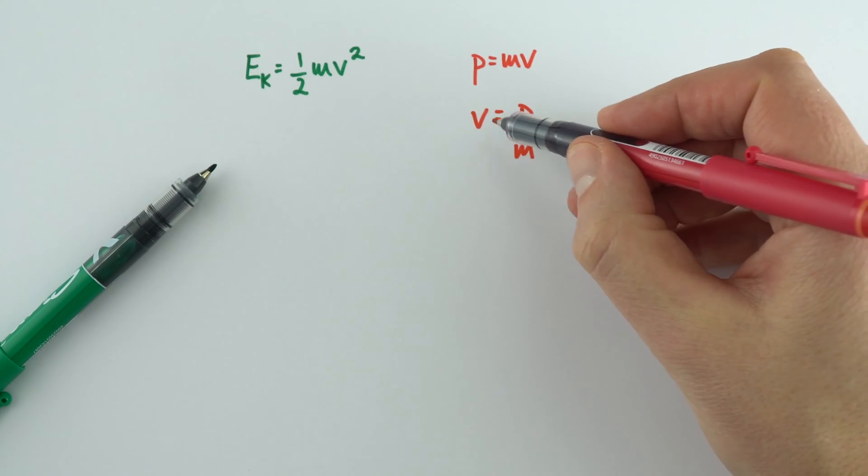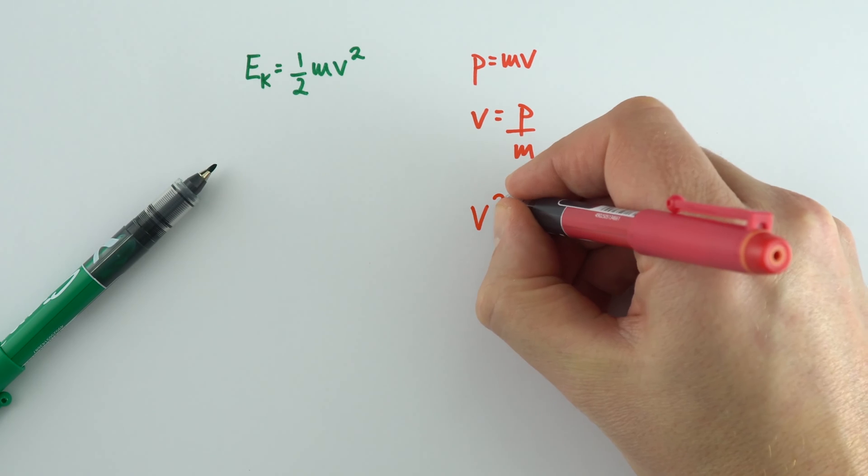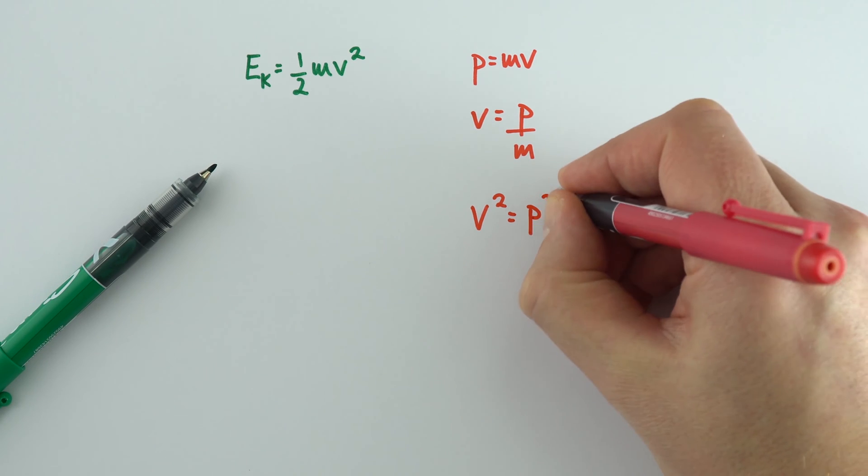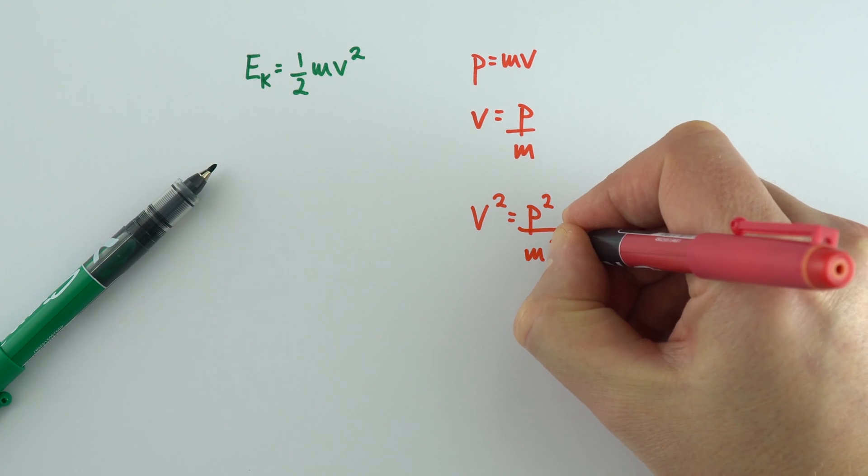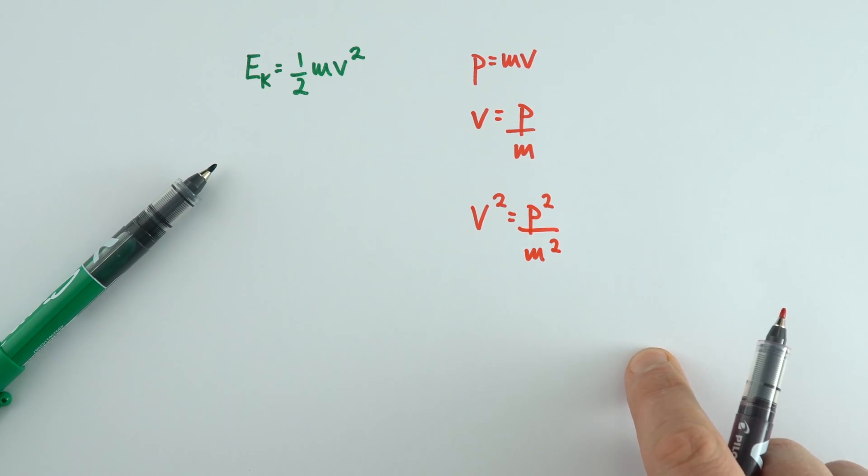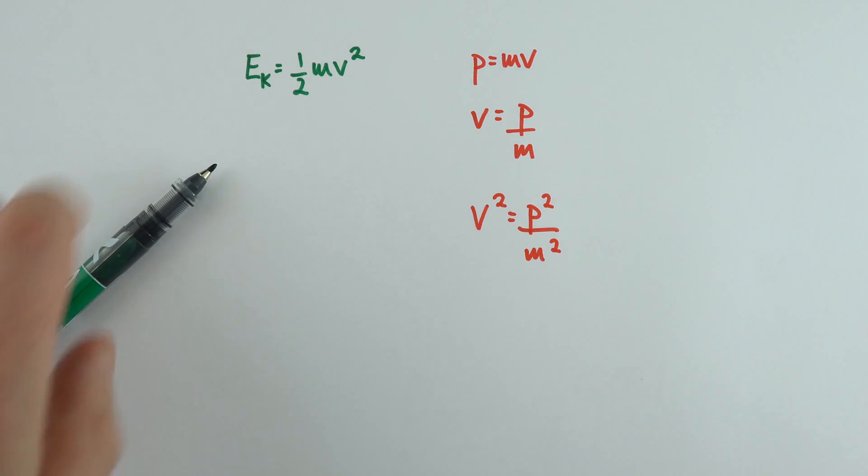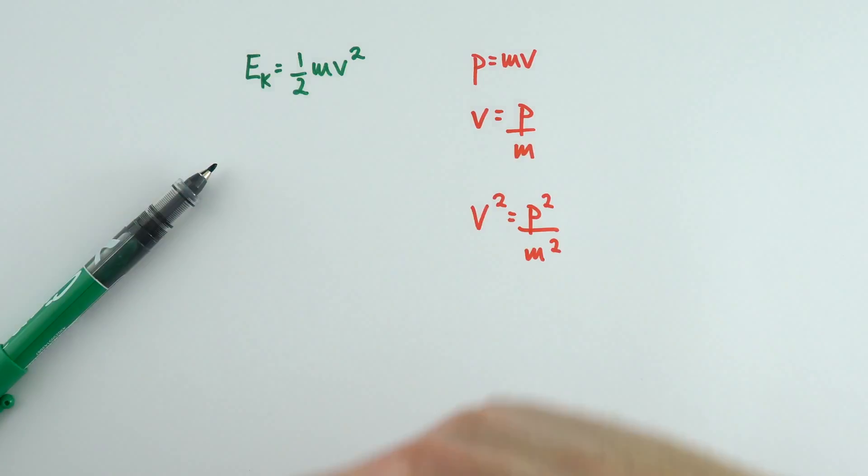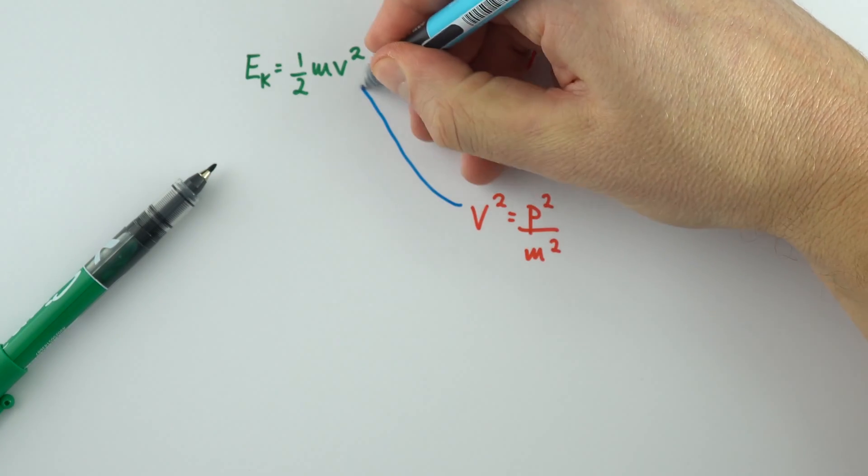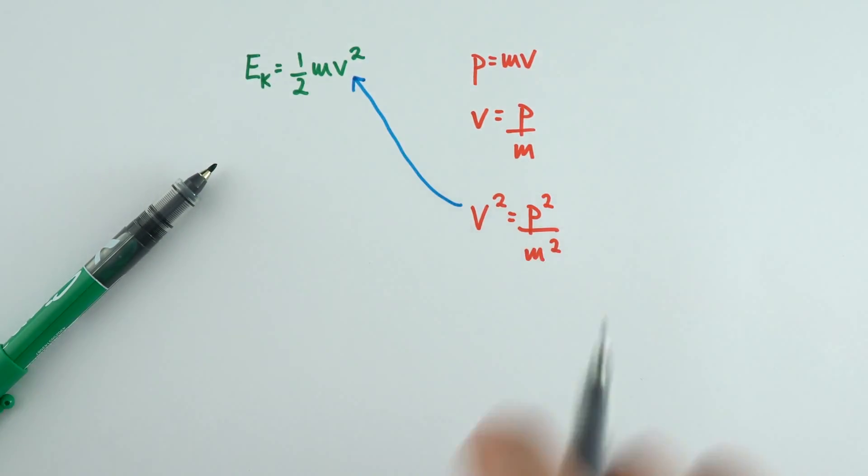What I can also do now is actually square both sides, so we can say that v² = p²/m². Now what we can then do in this equation over here is replace this v² with p²/m².